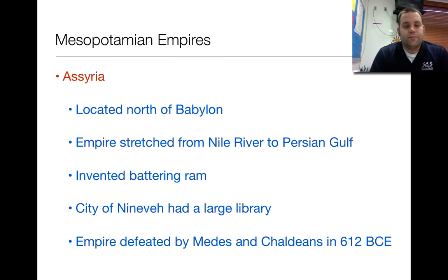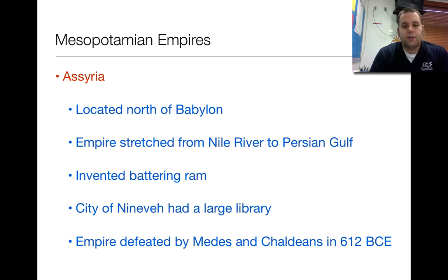Next is Assyria. Assyria was located north of Babylon — probably more up along the lines of where Israel is today, closer to the water, where there are lots of problems going on. The empire stretched from the Nile River to the Persian Gulf.